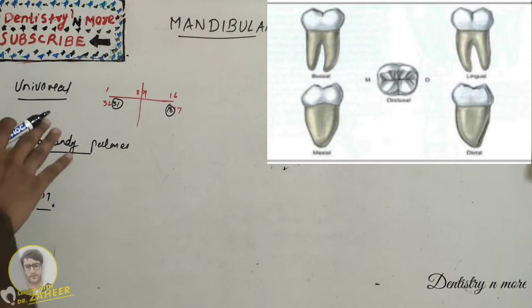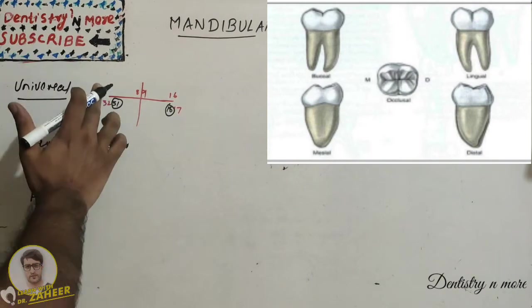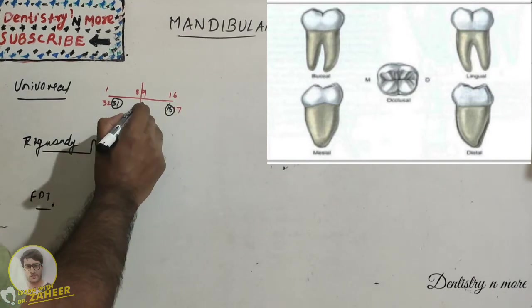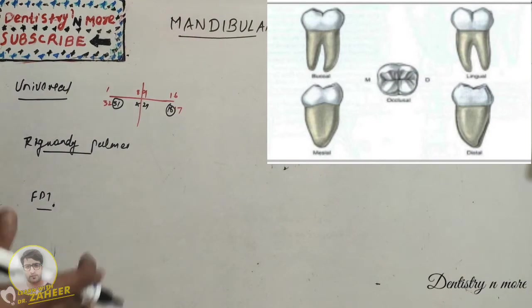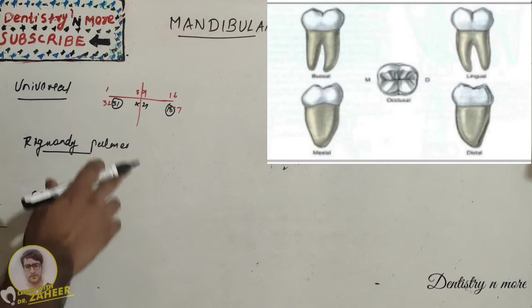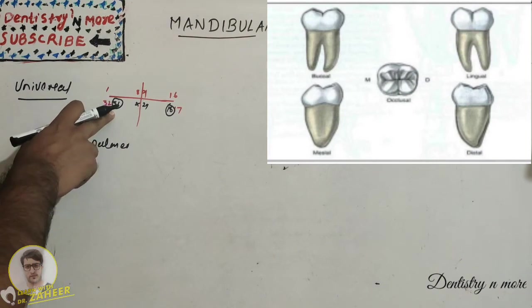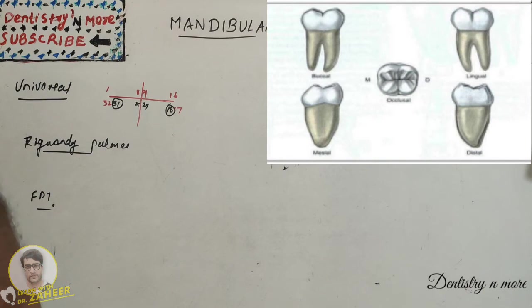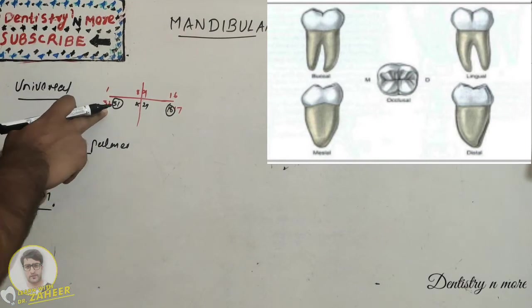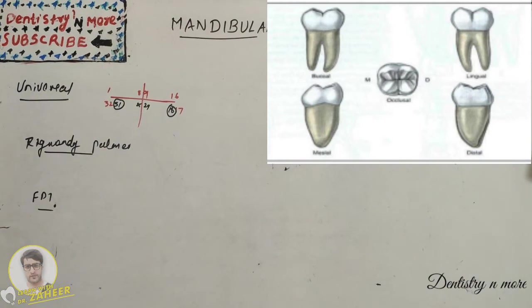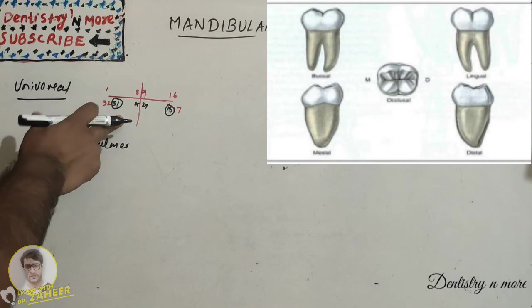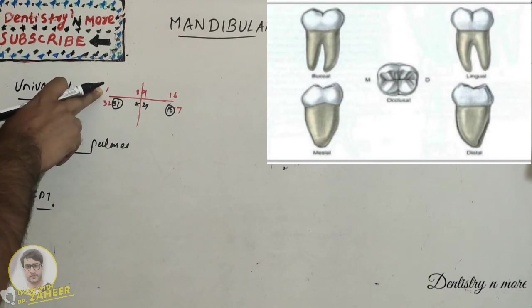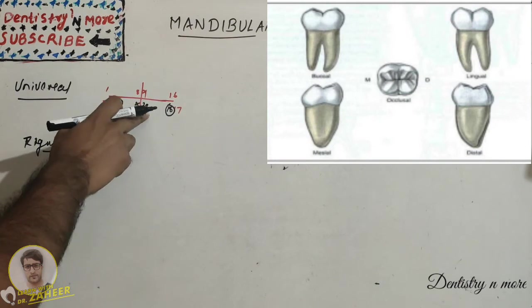So when you're studying universal system, always you need to have 1, 8, 9, 16, 17, 24, 25, and 32 in your mind. After that, you connect the particular tooth. So if 31 means the second molar, you need to have 32 in your mind, that is third molar, the next tooth 31 will be the right lower second molar. You can't memorize all these, only thing you can make sure that you know 1, 8, 9, 16, 17, 24, 25, and 32.